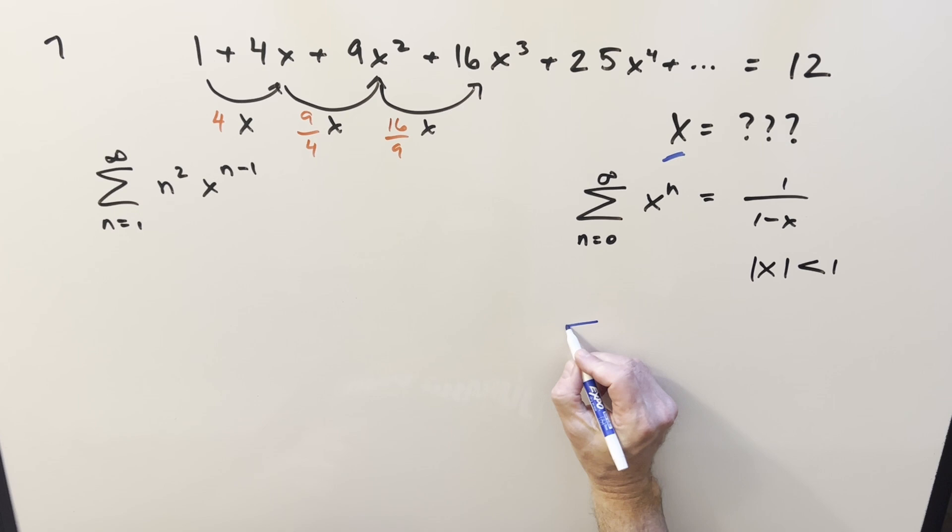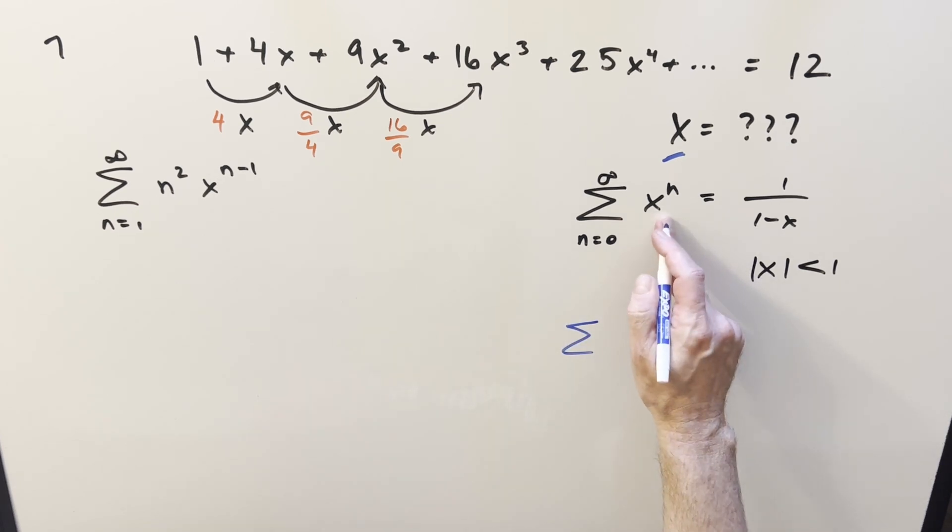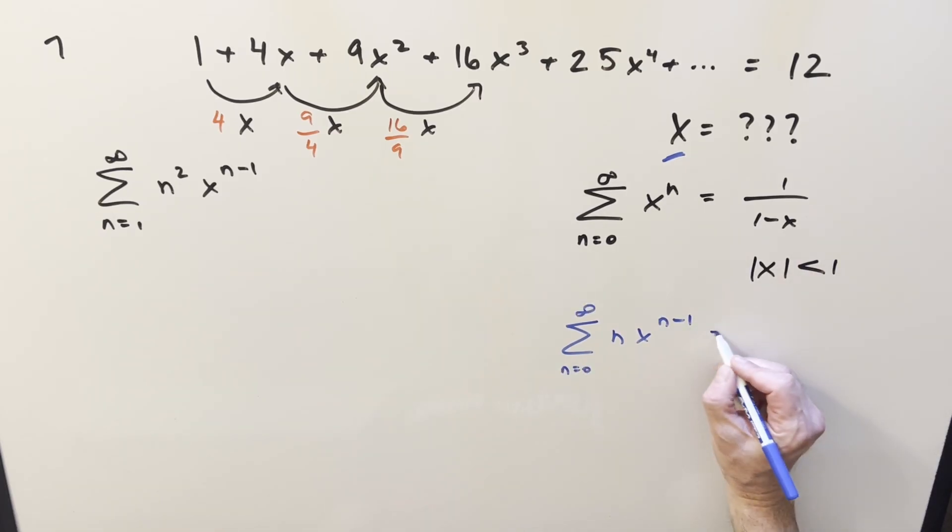Now, if I take this and just differentiate it, what's going to happen is we're going to get the n to pop up. And so it's going to start looking kind of like this - we're going to get n times x to the n minus 1. And then just differentiating on the right side as well, this becomes 1 over 1 minus x all squared. Initially, we have a minus sign pop up, but with chain rule here, that's going to cancel, and we're just going to have a plus in front. But then just notice that when n equals 0, the whole thing is 0, so we really don't need that term. So I can just change this to a 1 without changing the expression.